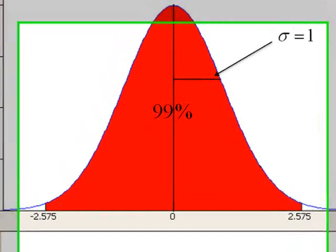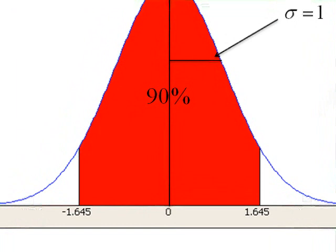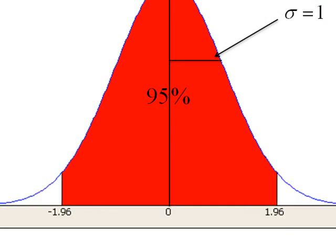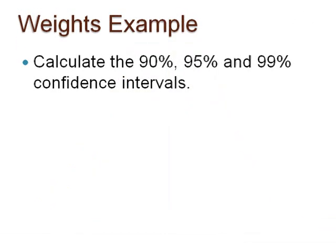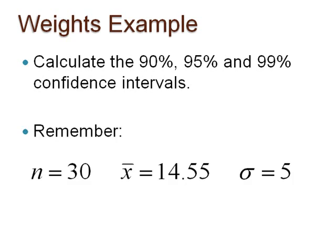Did you obtain plus or minus 1.645? Also, did you notice that the confidence level gets smaller as z-star gets smaller? Use these z-star critical values to calculate the 90%, 95%, and 99% confidence intervals for the weights example. Our sample mean from the first sample of size 30 was 14.55, and we were assuming the population standard deviation was known to be 5 ounces. Pause here to write down your answers and to consider what is happening to the margin of error.